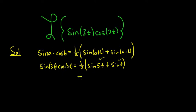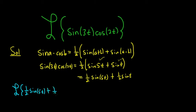So now we can distribute the 1 half. This is 1 half sine of 5t plus 1 half sine of t. Now we're good to go. We can take the Laplace transform. So the Laplace of this thing, this is 1 half sine 5t plus 1 half sine t.